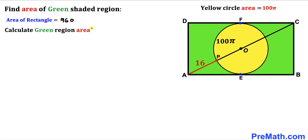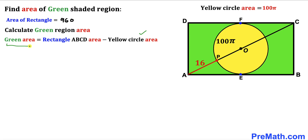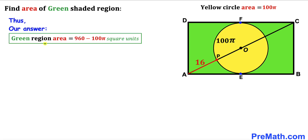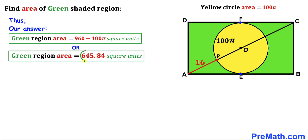For our final step, the green shaded region area equals the rectangle ABCD area minus the yellow circle area. The rectangle area is 960 and the yellow circle area is 100π. Therefore the green shaded area is 960 minus 100π square units, which equals approximately 645.84 square units. Thanks for watching and please subscribe to the channel for more exciting videos.